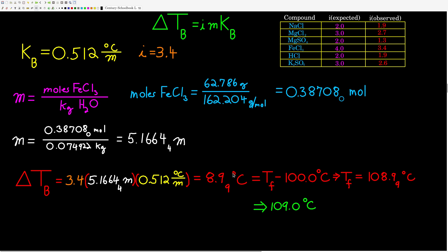That delta Tb of 9.0°C is not our final answer. Since water boils at 100°C, delta Tb equals the final boiling point minus the initial boiling point. Rearranging and solving for the new boiling point gives us 109.0 degrees Celsius.